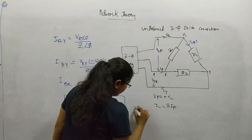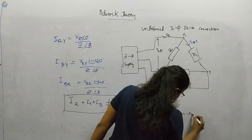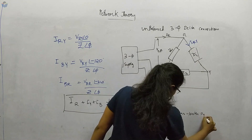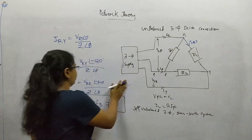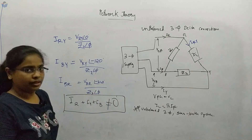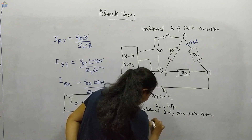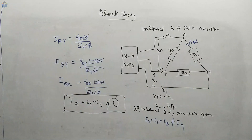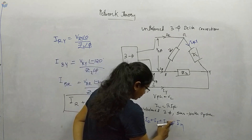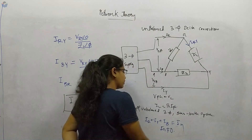For the unbalanced three-phase star four-wire system, everything is the same as before but Z is replaced with Z1, Z2, and Z3. Here, IR plus IY plus IB equals IN, but IN is not equal to zero — it can be any value. This is for the unbalanced three-phase star four-wire system.